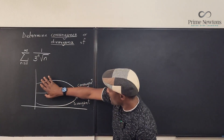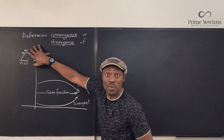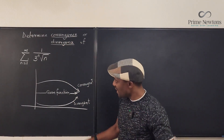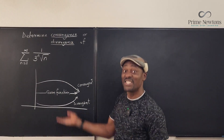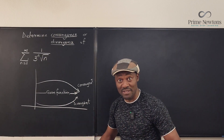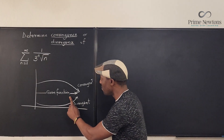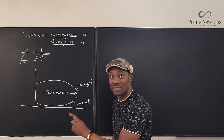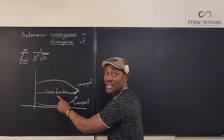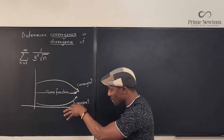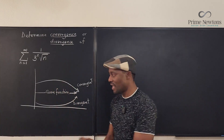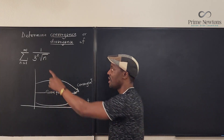If you can find a function that is greater than what we're given and it is convergent, you're good. Or a function that is less than the function we're given and it is divergent, we're good. If the function we find is divergent, it's going to push our function into divergence. If the function we find is greater than our function and it is convergent, it's going to force our function to converge.